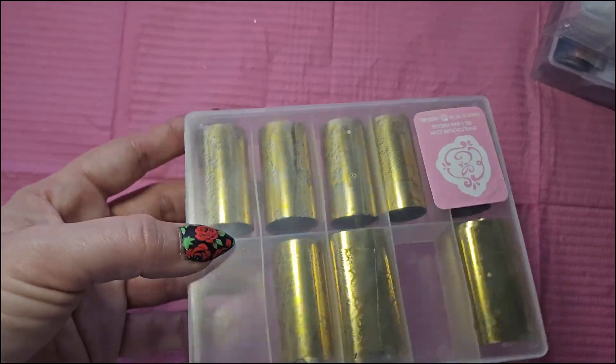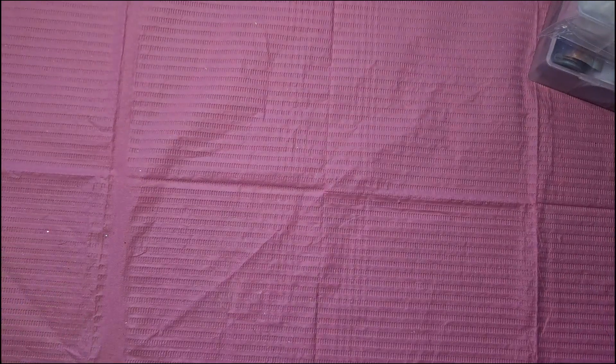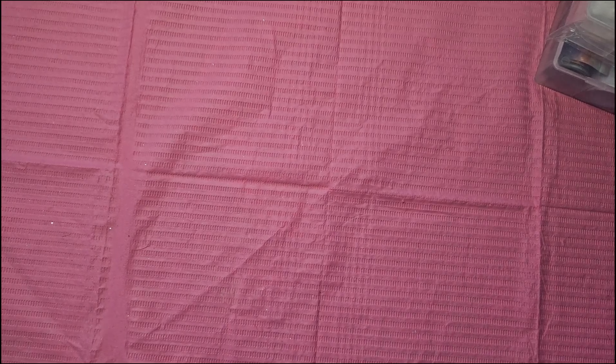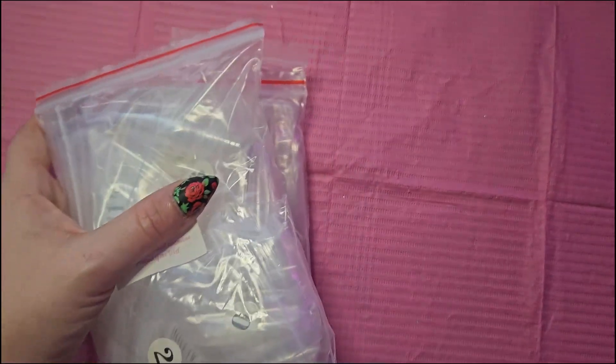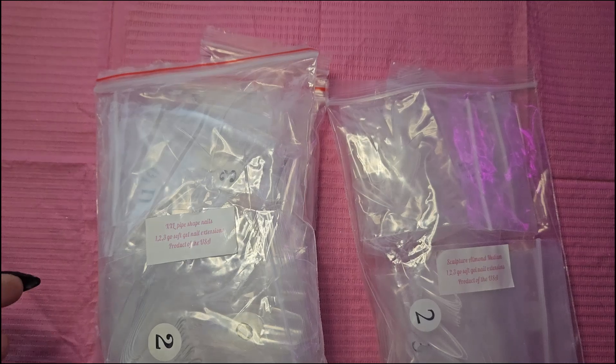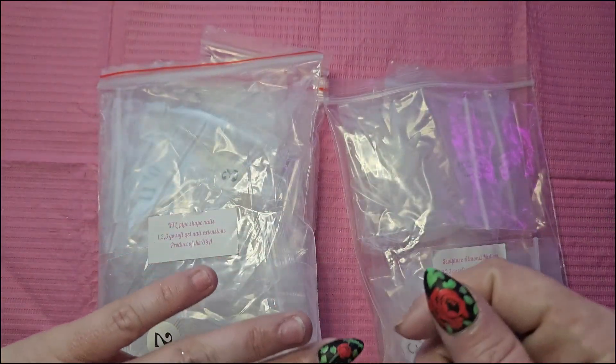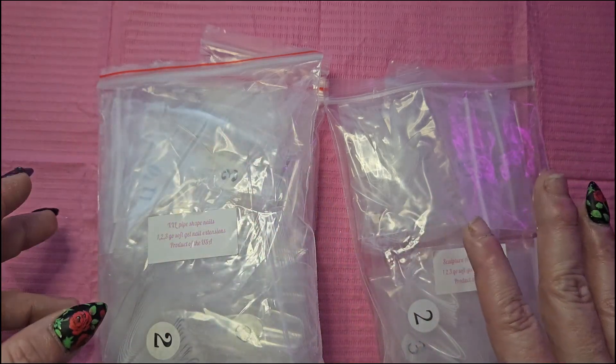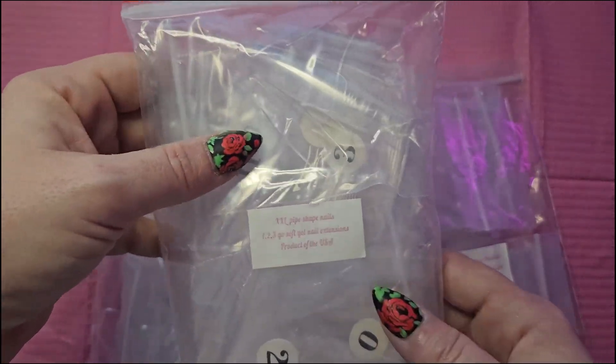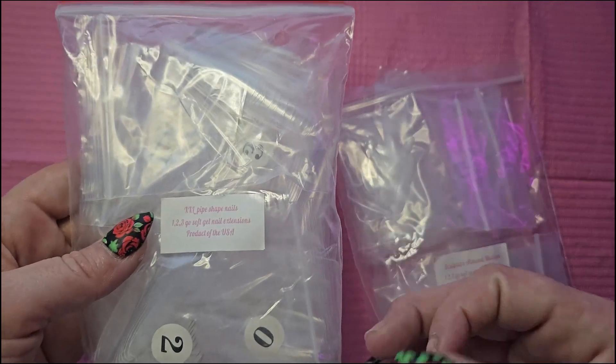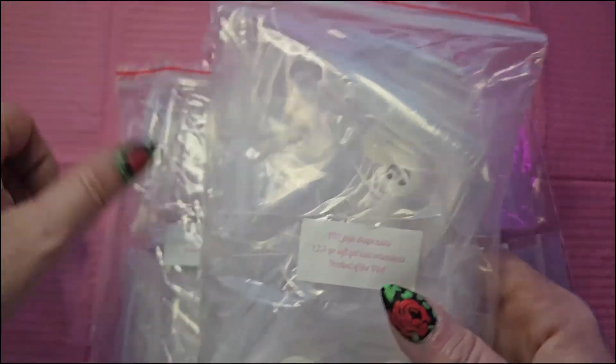Another item I'm going to try to speed through. I also received them in my last two scoop boxes consistently, and that's going to be their 123GO Soft Gel Nail Extensions. Most of the styles I got in this box I received in my last two boxes. But there are two of them that are new for me: these XXL Pipe Shape Nails, I got two of them, and one of their Sculpted Medium Nails.